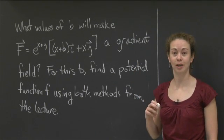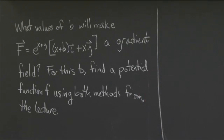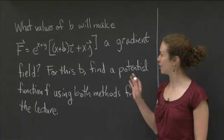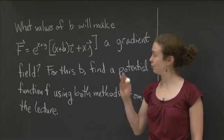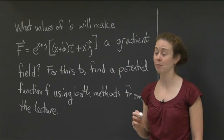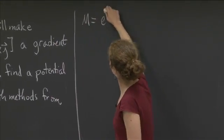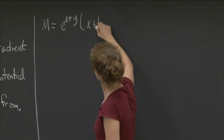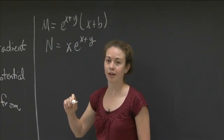Why don't you pause the video, work on this, and then when you are ready to look at how I do it, bring the video back up. Okay, welcome back. So I'm going to start off working on the first part of this problem, which is to find the values of B that will make this vector field F a gradient field. And to clarify things for myself, I'm going to write down what m and what n are based on F. So m is equal to e to the x plus y times (x plus b) and n is equal to x times e to the x plus y.